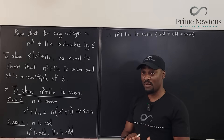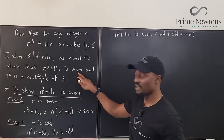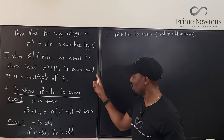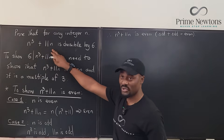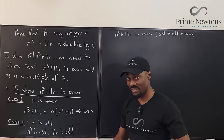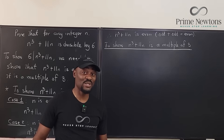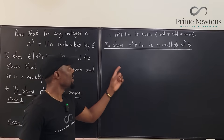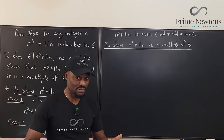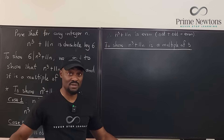We have now shown the first part — that this expression is always even. Now the second part is we have to show that this expression is always a multiple of three. That's a bit harder. The task now is to show that n cubed plus 11n is a multiple of three, because as soon as we do that, we're done with this proof.